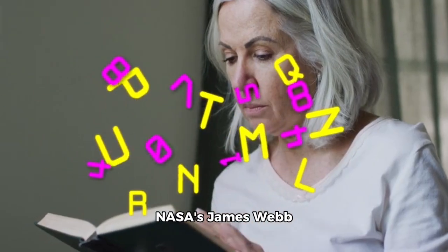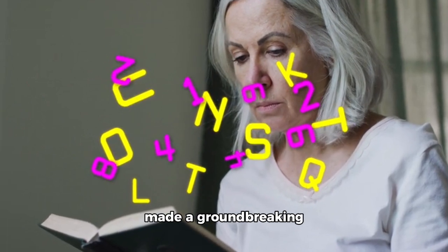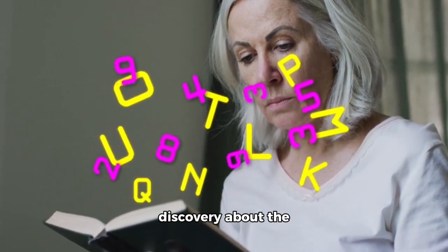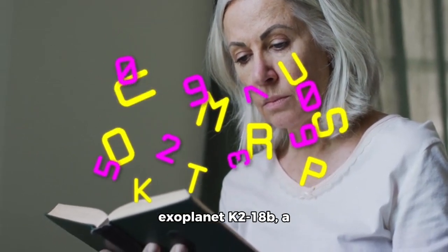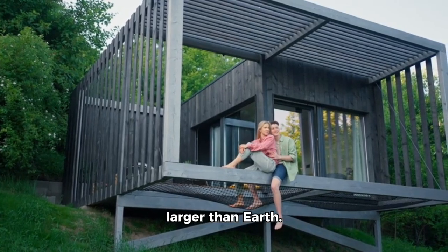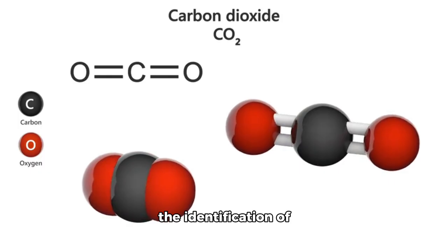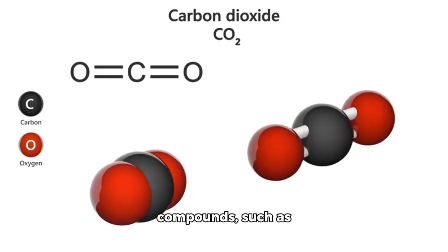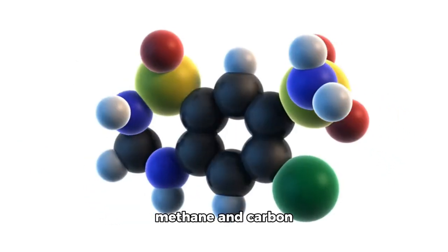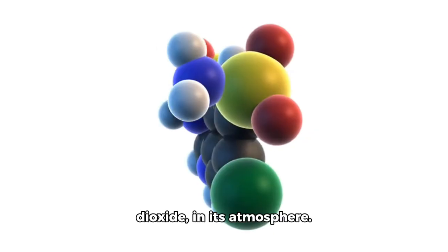NASA's James Webb Space Telescope has made a groundbreaking discovery about the exoplanet K218b, a planet 8.6 times larger than Earth. What makes this finding particularly exciting is the identification of specific carbon compounds such as methane and carbon dioxide in its atmosphere.